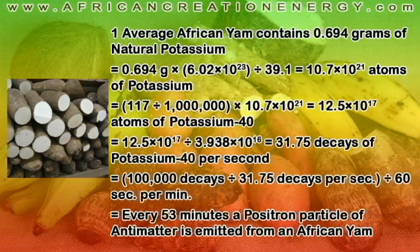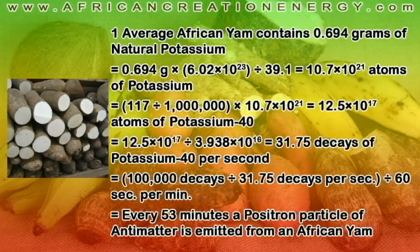The average African yam contains 694 milligrams of natural potassium. When we do our calculation, we find that 10.7 times 10 to the 21 individual atoms of potassium exist in the average African yam. Of those individual potassium atoms, 12.5 times 10 to the 17 of those atoms are potassium-40. When we do our rate calculation, we find that 31.75 decays of potassium-40 occur per second in the average African yam. And when we do our final calculation, we find that every 53 minutes, a positron particle of antimatter is emitted from the average African yam.